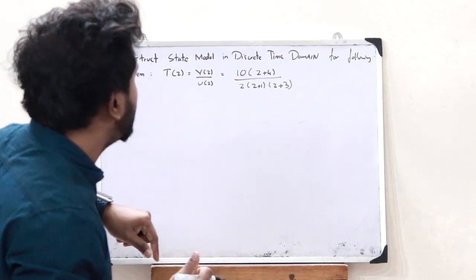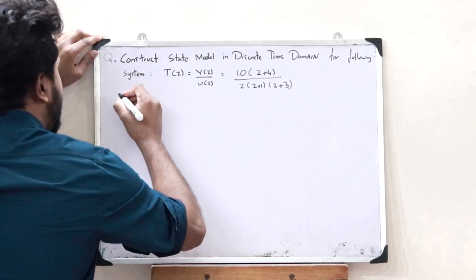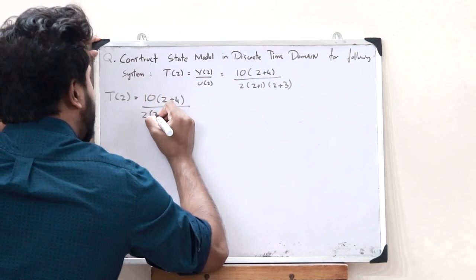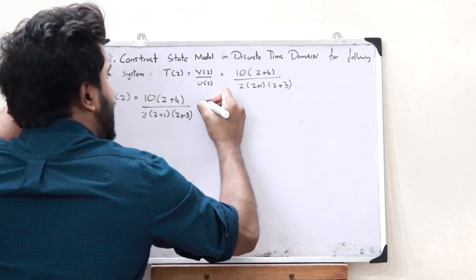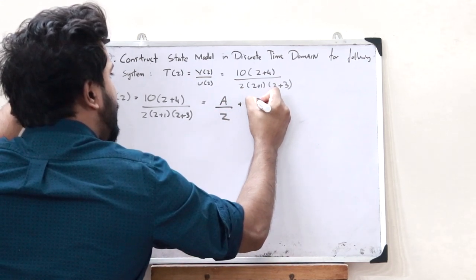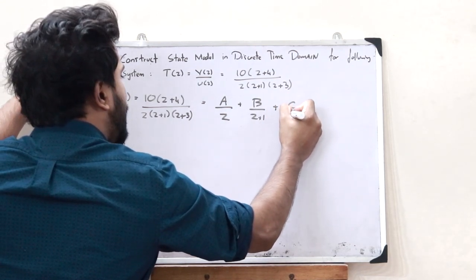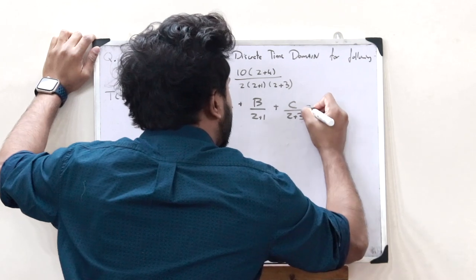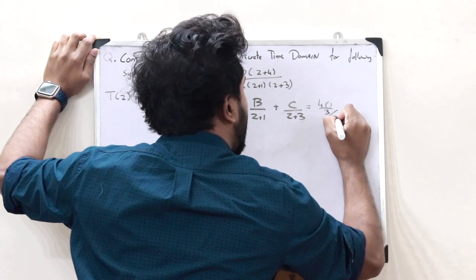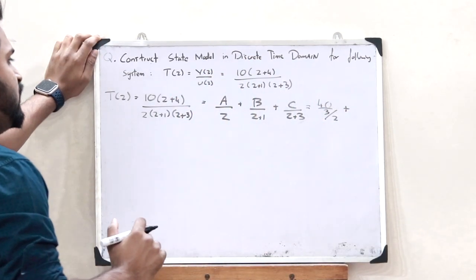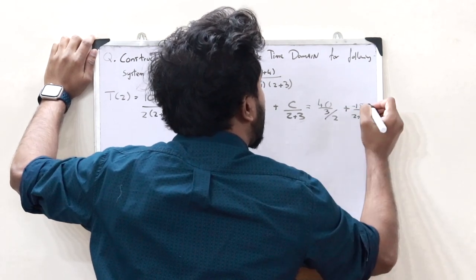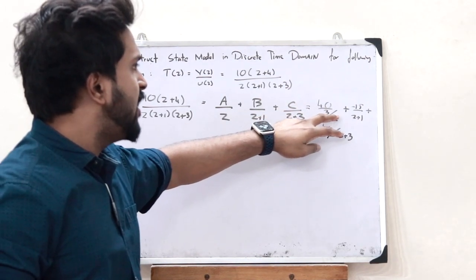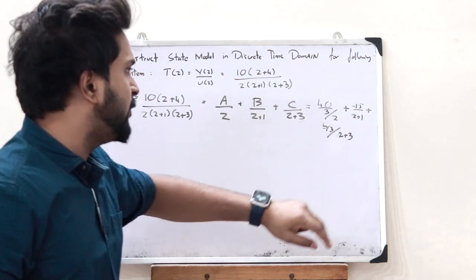When we see such a transfer function, first what we have to do is split it using partial fractions. So 10(Z + 4) divided by Z(Z + 1)(Z + 3) is split as A divided by Z, plus B divided by (Z + 1), plus C divided by (Z + 3). Upon simplifying, we get A = 40/3, B = −15, and C = 5/3. So we have (40/3)/Z + (−15)/(Z + 1) + (5/3)/(Z + 3).